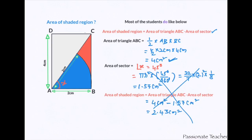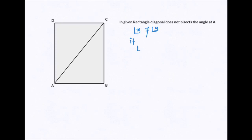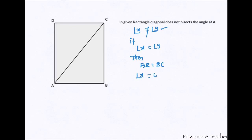The reason is that x cannot equal 45 degrees. If you consider the rectangle shown here, when a diagonal bisects it, we cannot say angle x equals angle y. In a rectangle, if angle x were equal to angle y, that would mean AB equals BC, making it a square. But since this is a rectangle and AB is not equal to BC in the given problem, angle x does not equal angle y, and we cannot conclude that angle x is 45 degrees. That would only be valid for a square.